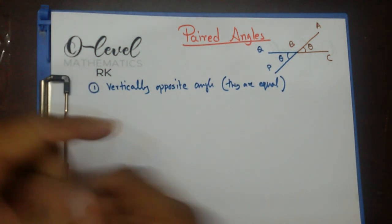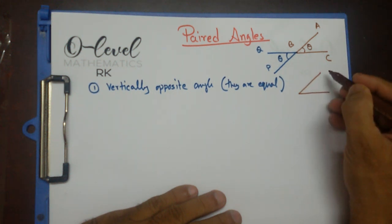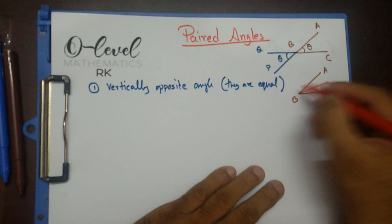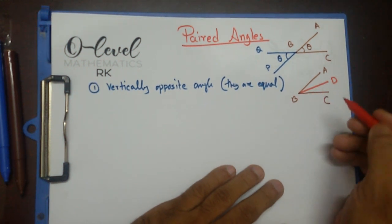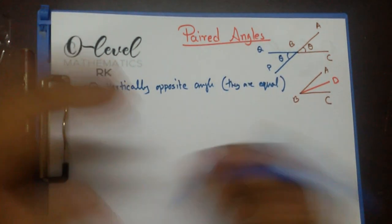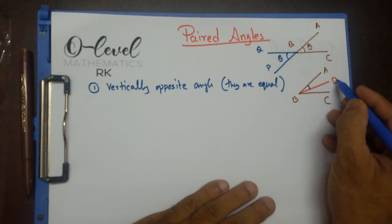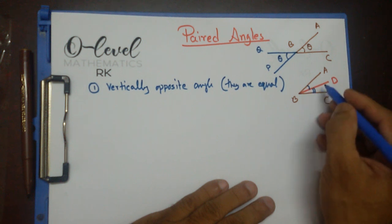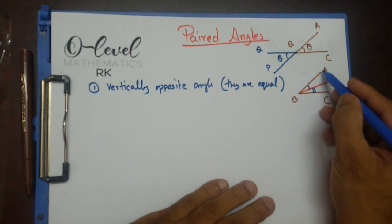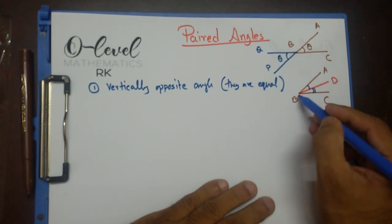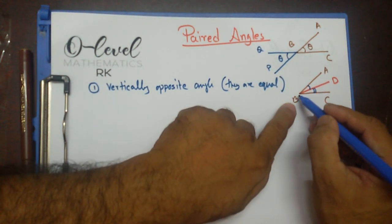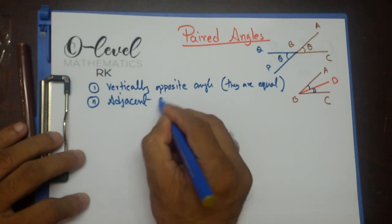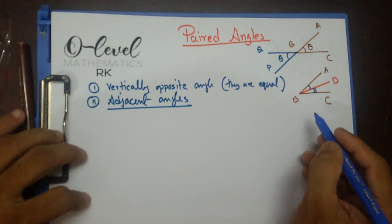The next one is adjacent angles. If I have an angle ABC, they are meeting at common point B, and there is a line in between — let's say line segment CD. You can clearly see that these two angles, angle ABD and angle DBC, may or may not be equal. These two angles have one common vertex and one common line segment. If we have any angles like that, we call them adjacent angles.